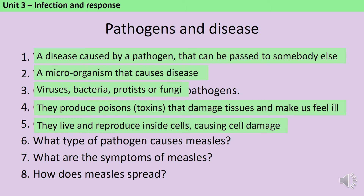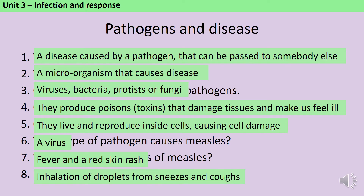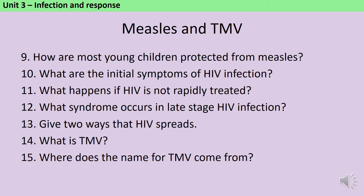Measles is caused by a virus and it gives you a fever and a red skin rash. It spreads through the inhalation of droplets from sneezes and coughs. You can be protected from measles by vaccination, either with a single measles jab or more commonly with the MMR vaccine, which also provides protection against mumps and rubella.